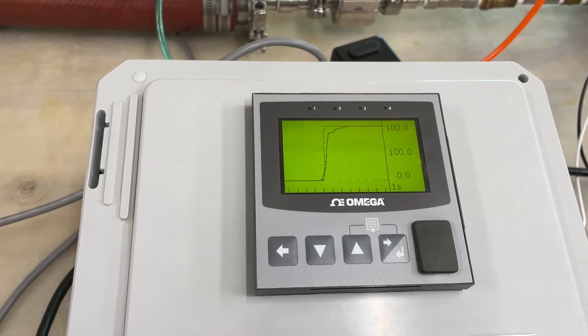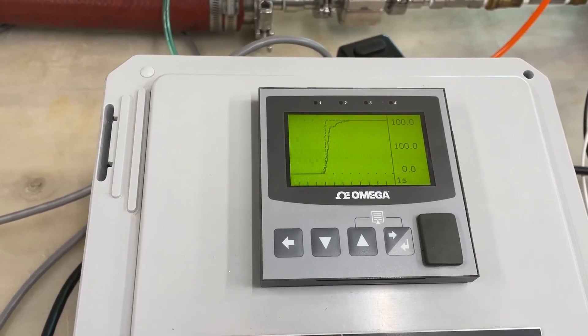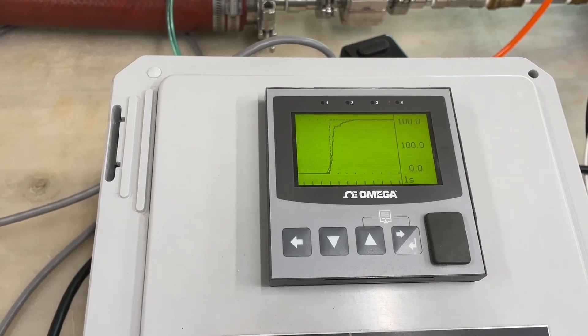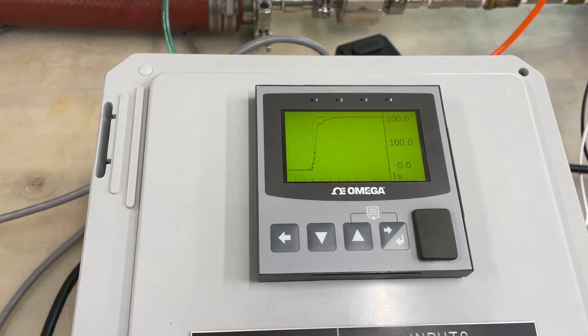Now the flow is at 100% set point or 1000 grams per minute. You can see how the PID loop adjusted the pressure on the dome to achieve the correct flow. With our Equilibar flow control valve and this PLC setup we have achieved a 100 to 1 turndown ratio.